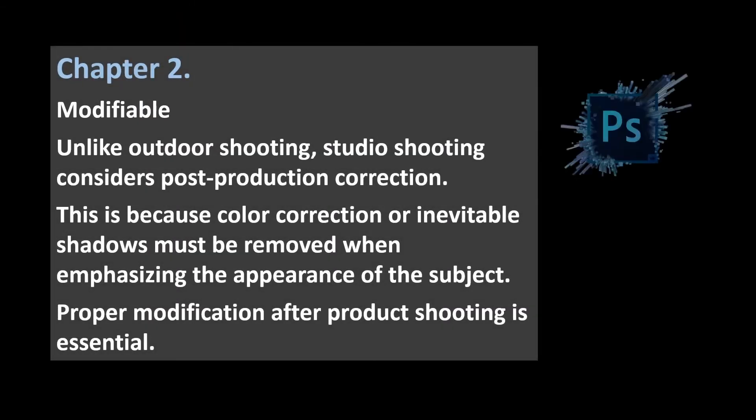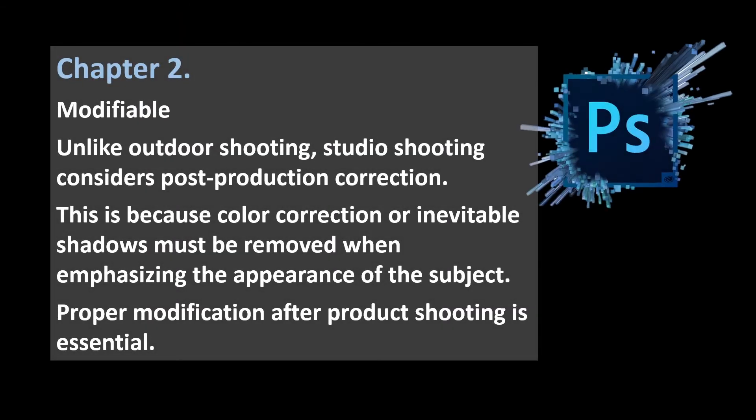Chapter 2: Modifiable (Post-Production). Unlike outdoor shooting, studio shooting considers post-production correction. This is because color correction or inevitable shadows must be removed when emphasizing the appearance of the subject. Proper modification after product shooting is essential.